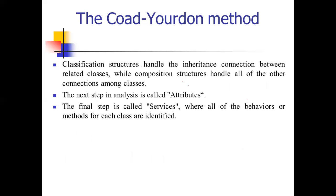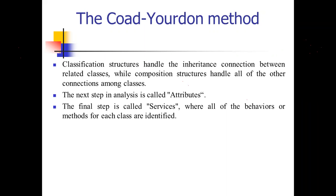The fourth step is Attributes, where we identify the properties and associations for every instance. The fifth and last step is Services, where we identify the object state and define services for accessing and modifying that state — that is, where all the behaviors and methods for each class are identified. These are the five steps of the Coad-Yourdon method.